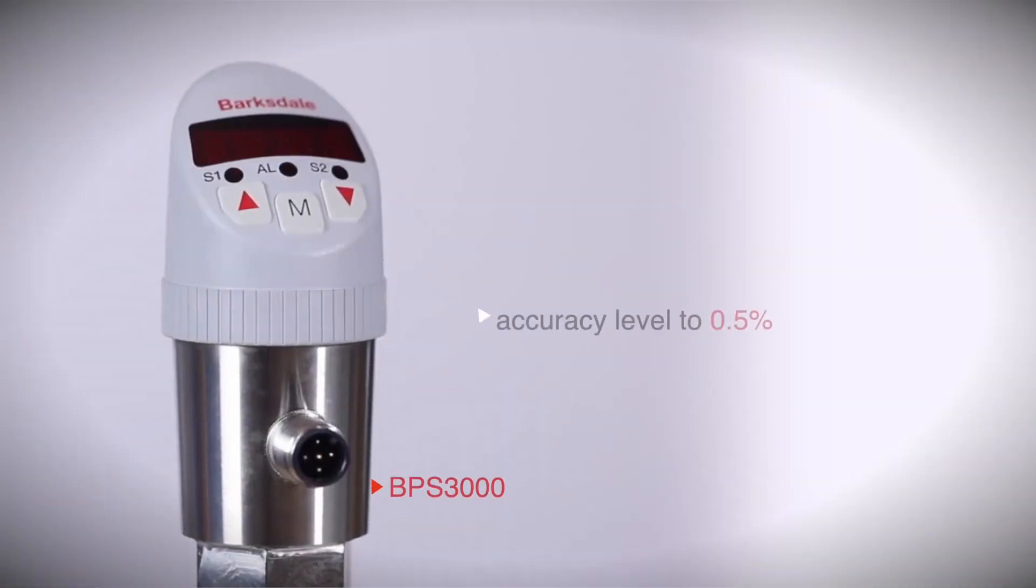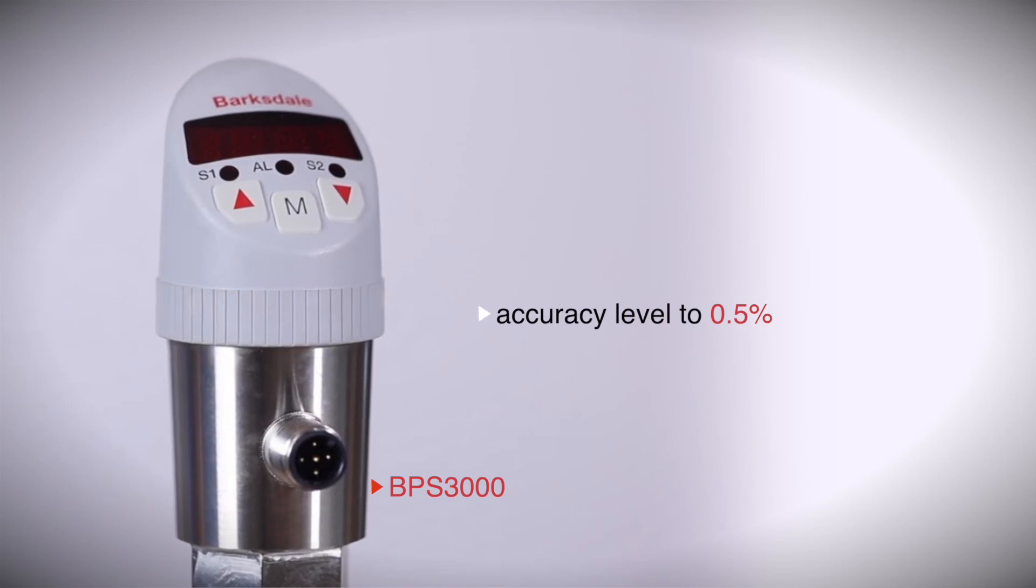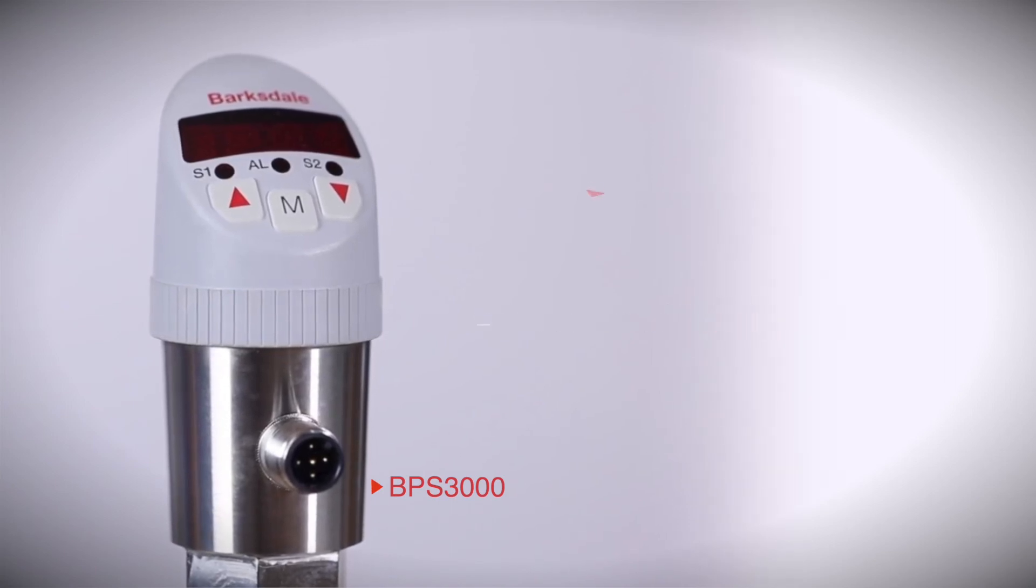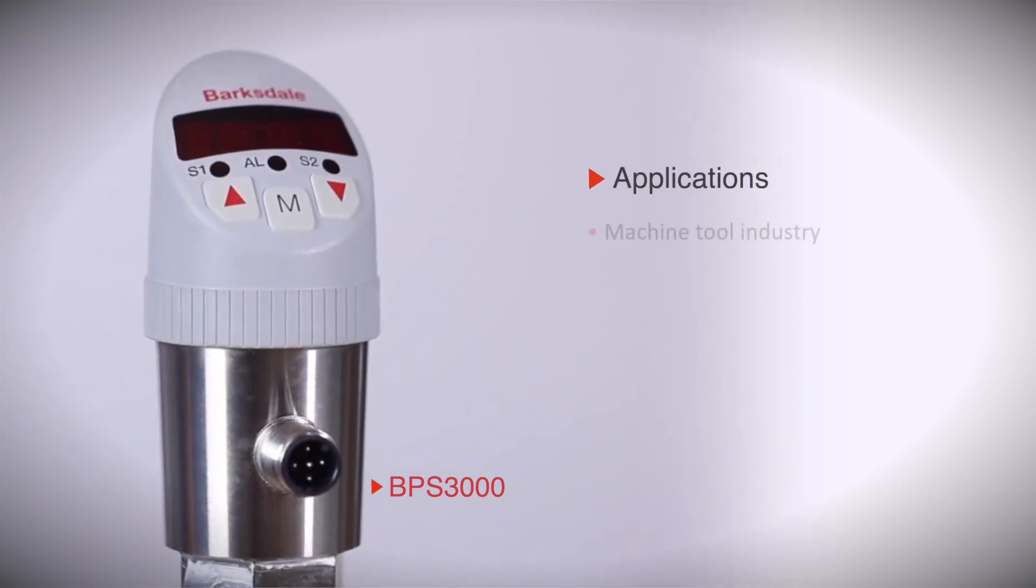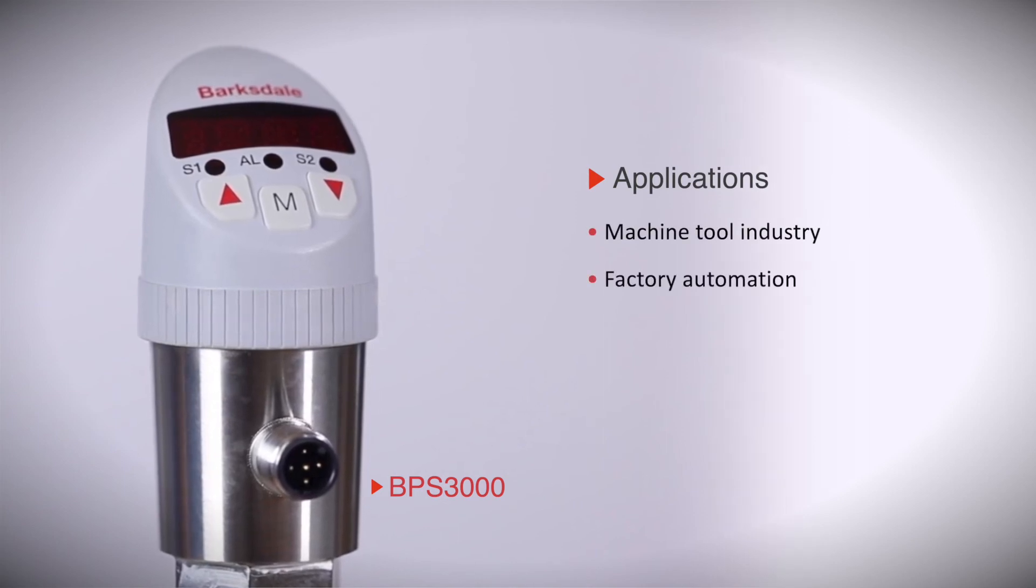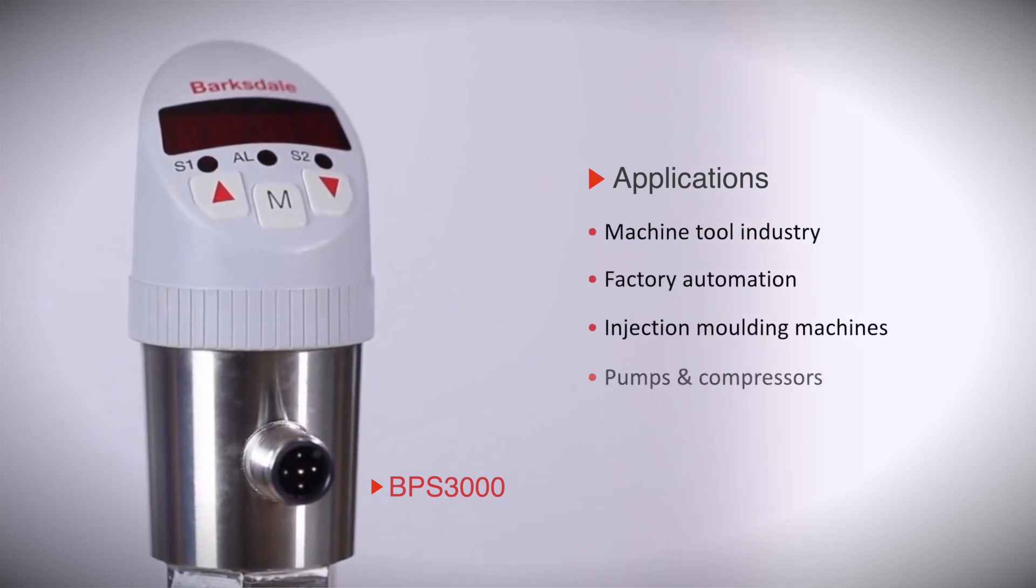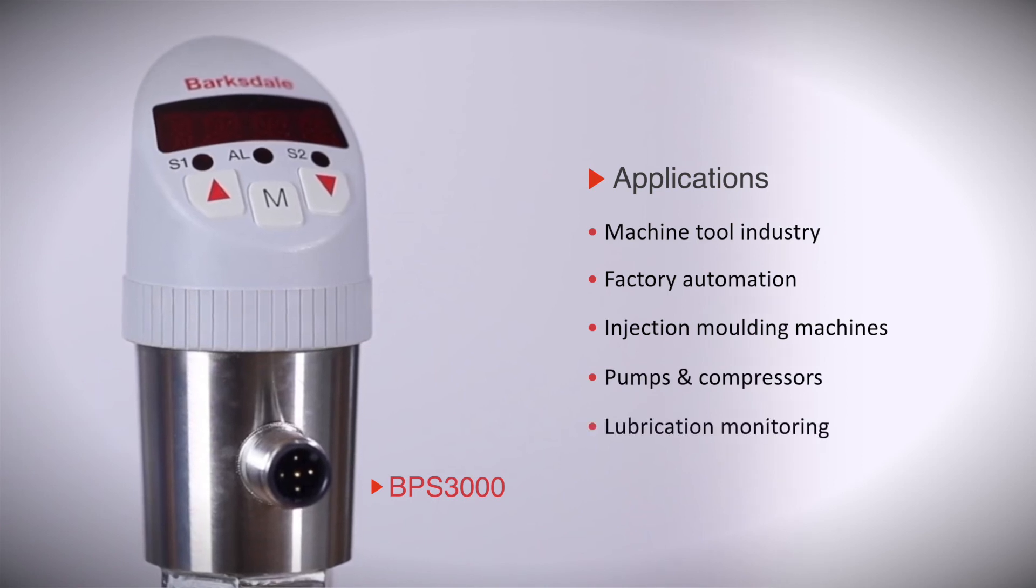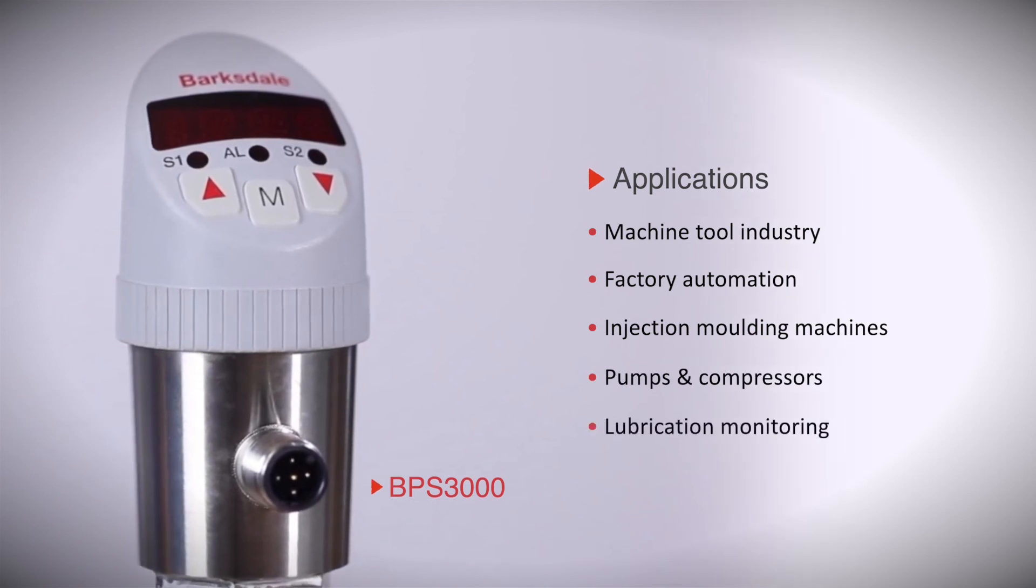With high accuracy of 0.5%, the BPS 3000 is exceptionally suitable for various applications like machine tool industry, factory automation, injection molding machines, pumps and compressors, and lubrication monitoring.